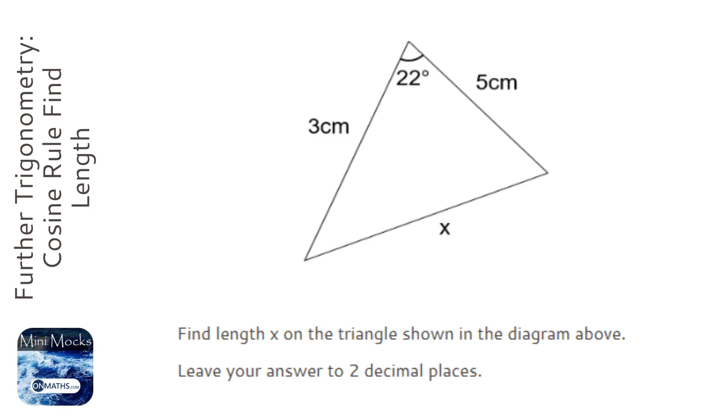Whenever you've got three lengths and an angle, it's probably going to be the cosine rule. So the cosine rule is a² = b² + c² - 2bc cos A.